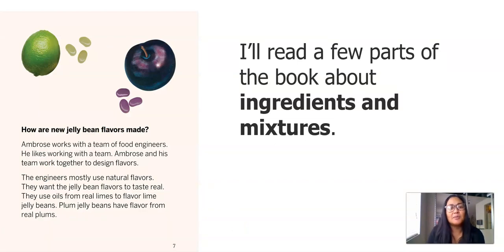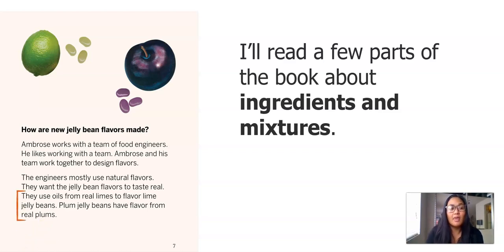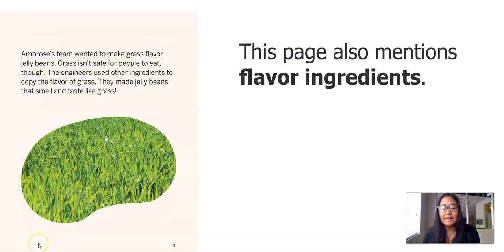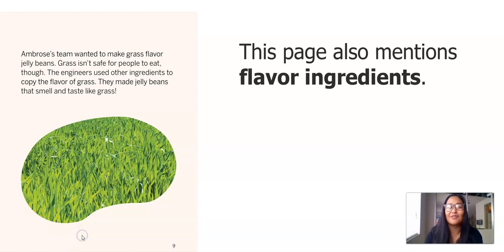Here's the first part. This book is about ingredients and mixtures. How are new jelly bean flavors made? Ambrose works with a team of food engineers and they design flavors together. I highlighted that they are actually using natural flavors for limes and plums. This next section is about flavor ingredients: Ambrose's team wanted to make grass-flavored jelly beans. Grass isn't safe for people to eat, so the engineers used other ingredients to copy the flavor of grass and made jelly beans that smell and taste like grass.